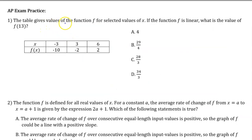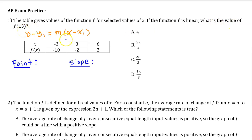Number 1. The table gives values of the function f for selected values of x. If the function f is linear, what is the value of f at 13? We can write the equation of a linear function in point-slope form if we have a point and the slope. For the point, we can pick any input-output pair — I'm going to pick (6, 2).